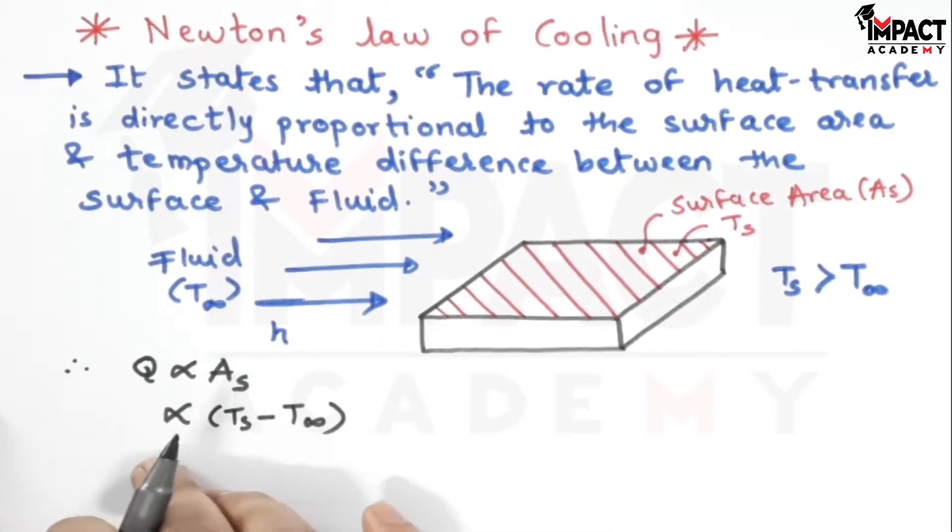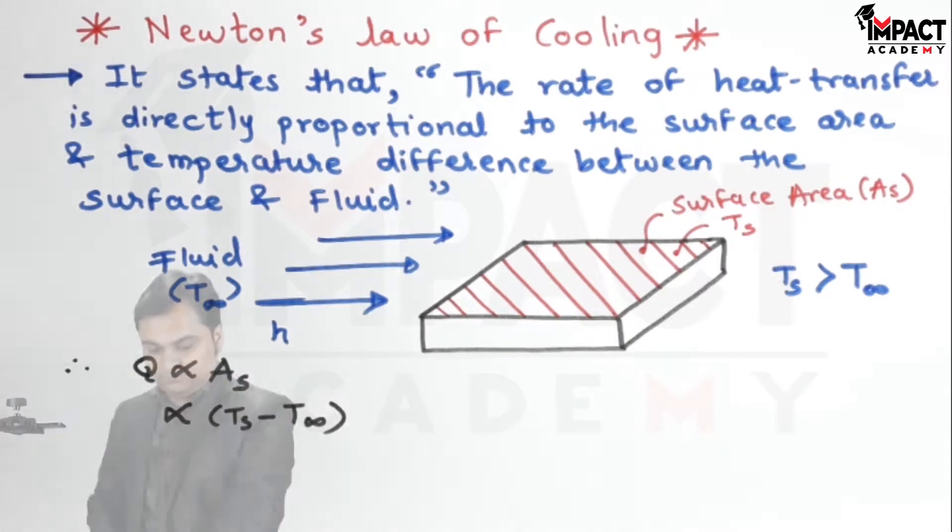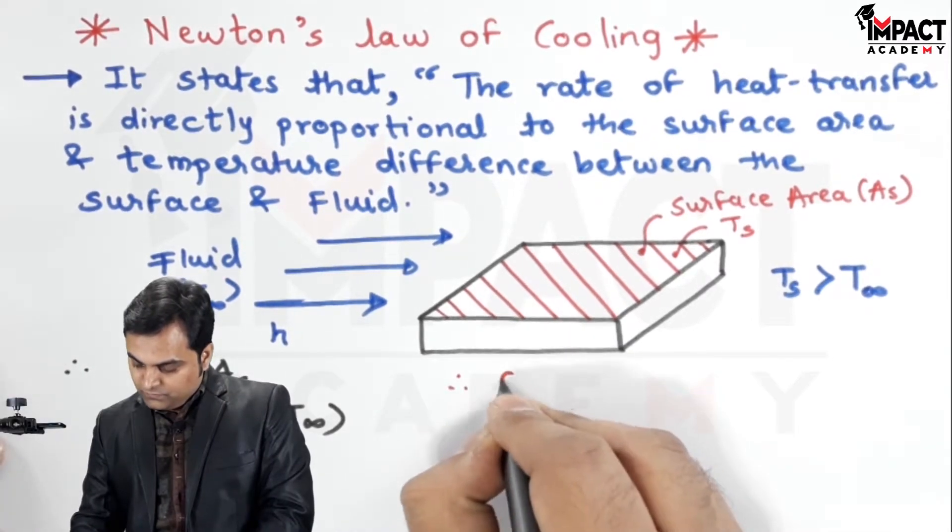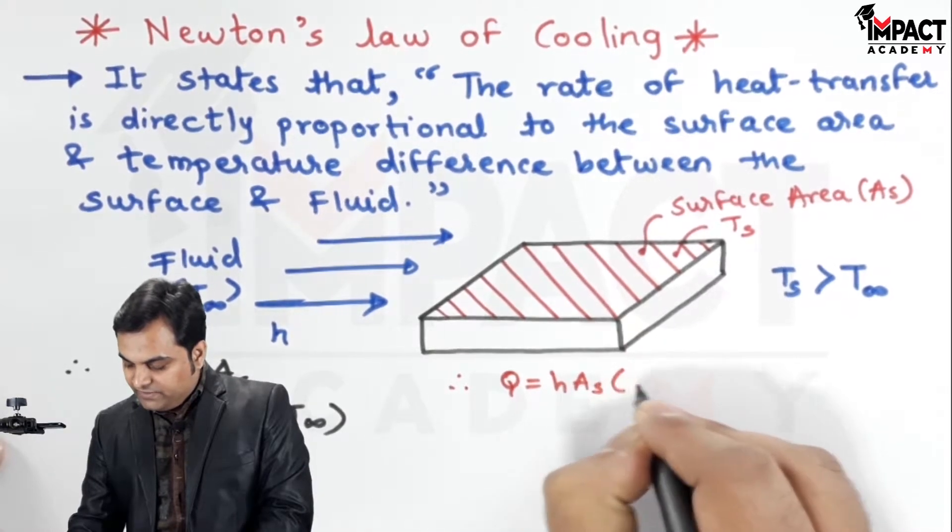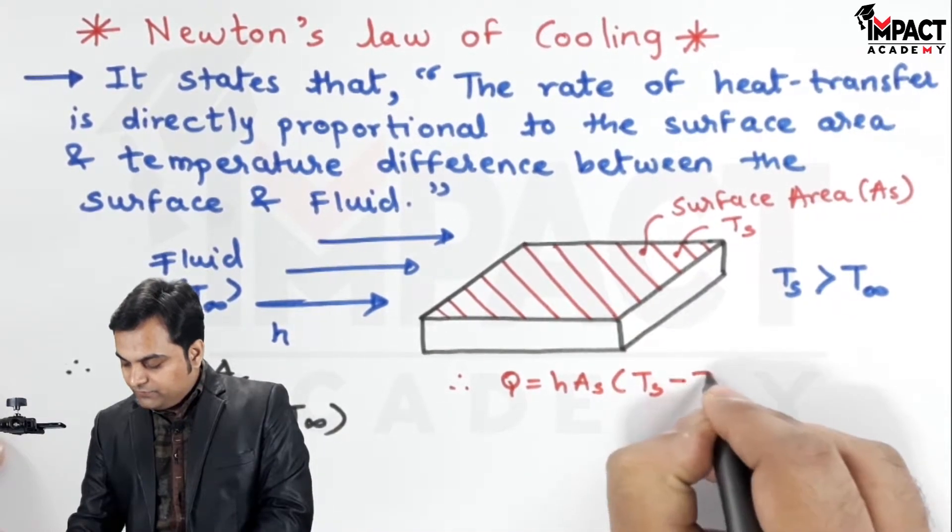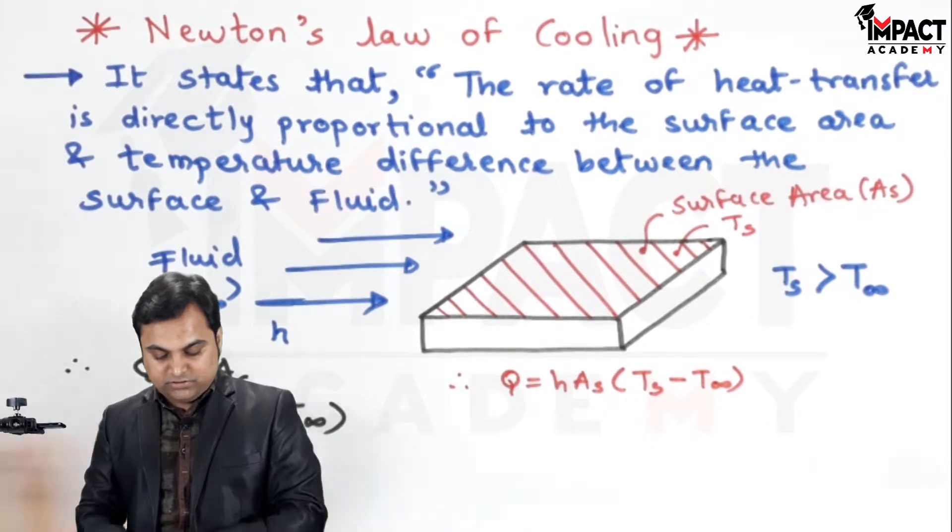So when I remove the proportionality sign, Q will be equal to h into surface area into surface temperature minus the fluid temperature.